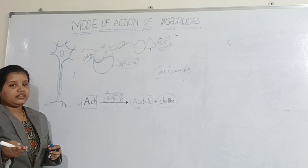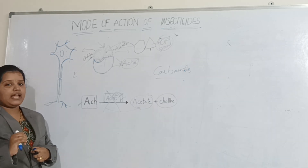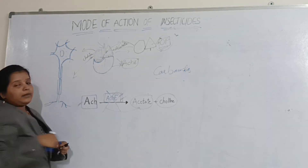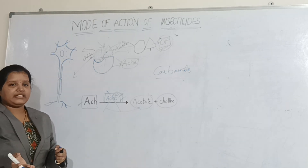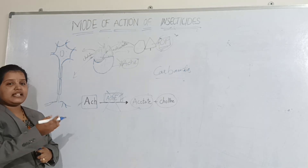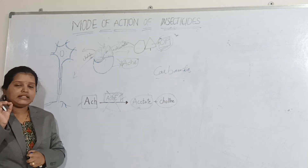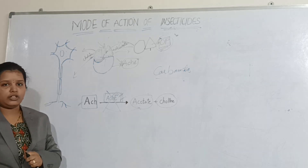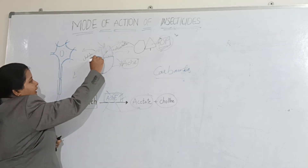When we spray a crop with carbamate insecticide and the insect consumes it, the acetylcholinesterase receptor can bind natural acetylcholine or it can also bind the carbamate insecticide, because both have a similar shape. That is why we call the carbamate insecticide mode of action competitive inhibition — there is competition between natural acetylcholine and the carbamate molecule for binding to this receptor.